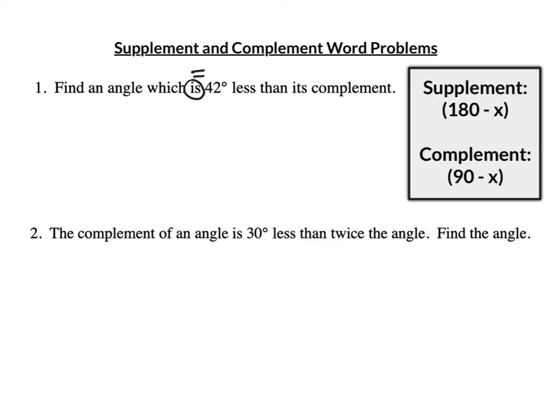So if I say a half of a number is 10, I'm saying it's equal to 10. That "is" splits the equation into two halves. On the left side, I'm going to find an angle — that's my x. I'm going to find an angle that equals 42 less.